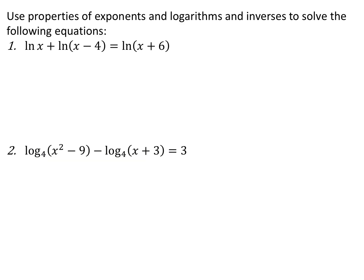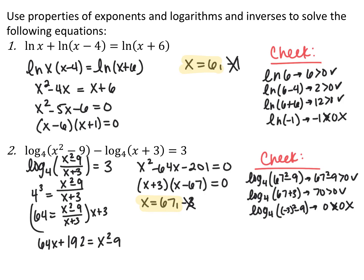For the next equation with natural logs, I have the same base logarithm on both sides, so I use the property that adding two logarithms with the same base means multiplying inside: natural log of x(x−4) equals natural log of (x+6). Since the bases match, the insides must be equal. Distributing gives x squared minus 4x equals x plus 6. Moving everything over and factoring gives (x−6)(x+1) equals 0, so x is 6 or negative 1. Checking: x equals 6 works in all three logarithms, but negative 1 does not work in the first one, so x only equals 6.